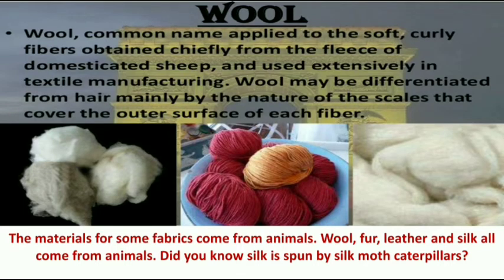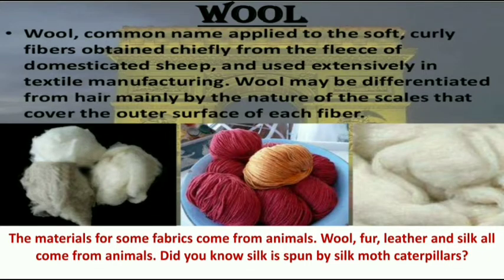Wool: the common name applied to the soft curly fibers obtained from the fleece of domesticated sheep, used extensively in textile manufacturing. Wool may be differentiated from hair mainly by the nature of the scales that cover the outer surface of each fiber. The materials for some fabrics come from animals — wool, fur, leather, and silk all come from animals. Did you know silk is spun by silk moth caterpillars?